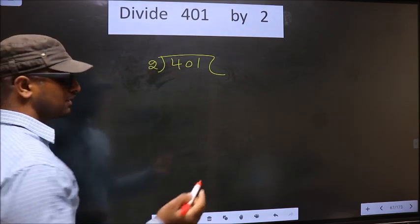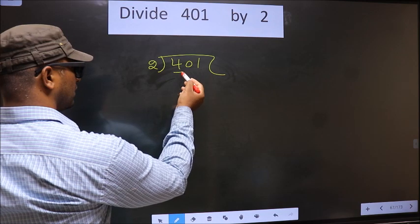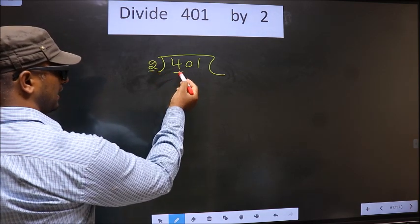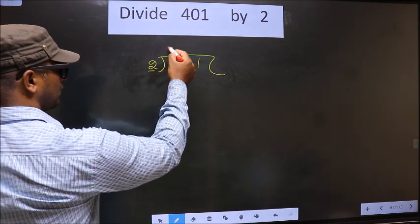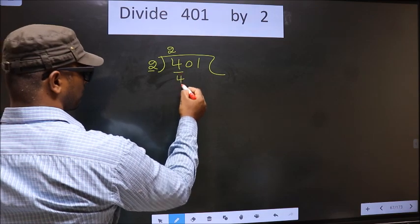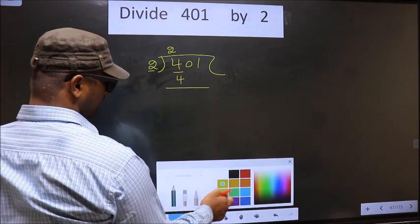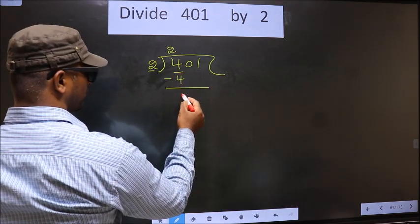Next. Now here we have 4. Here 2. When do we get 4 in 2 table? 2 2s, 4. Now you subtract. 4 minus 4, 0.